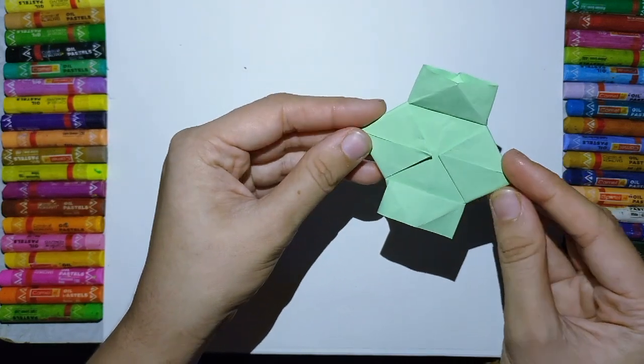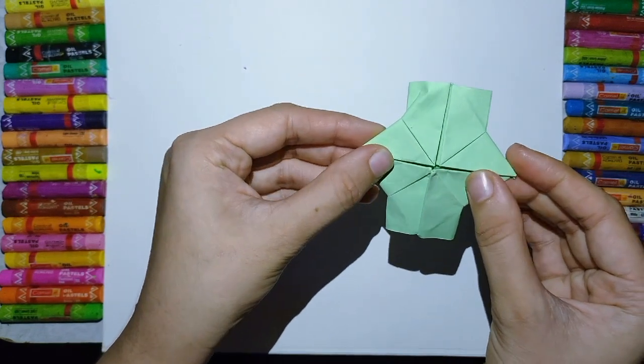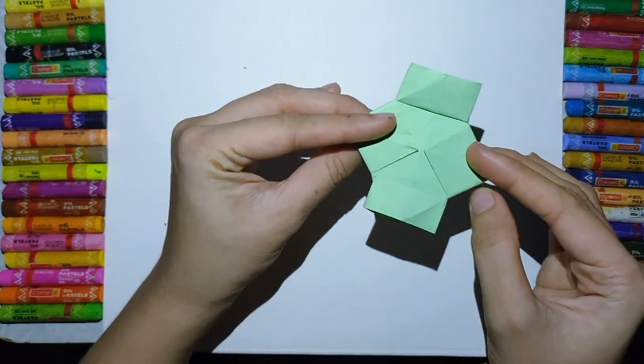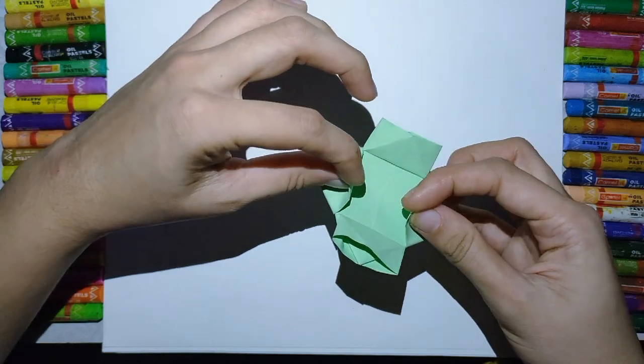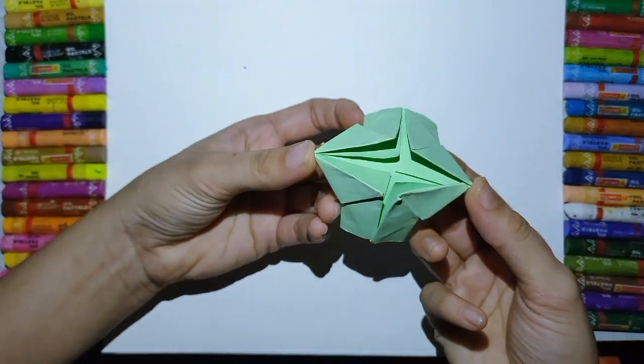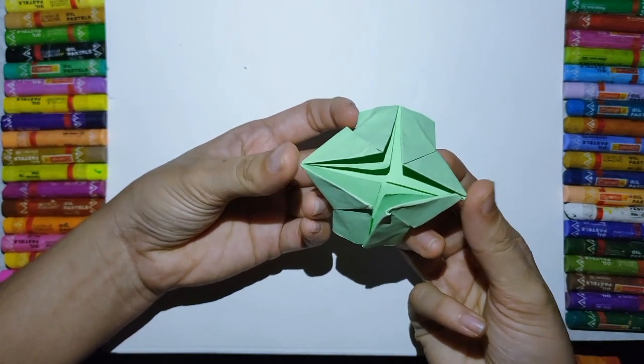Now the next process is turn your paper back side. And see, hold this corner, hold this corner, both the corners. And turn your paper back side. And hold these two corners of the paper.